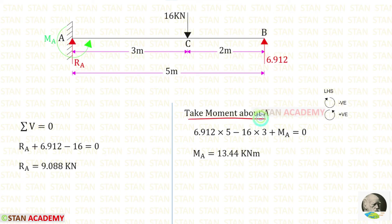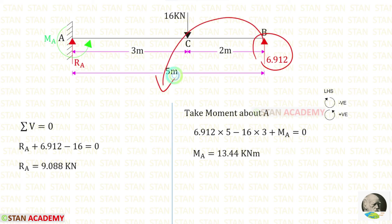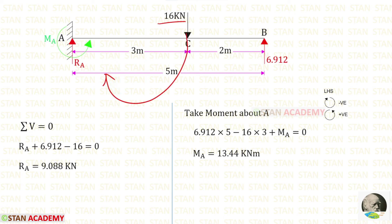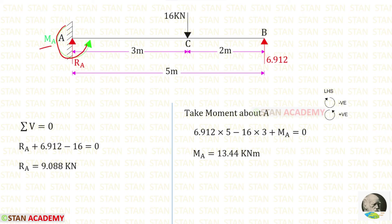Now let us take moments about A to find MA. Moving from the left, clockwise is negative and anticlockwise is positive. The vertical reaction RB acts anticlockwise at a distance of 5, and the 16 kN load acts clockwise at a distance of 3. Assuming MA acts anticlockwise, we get a positive value, confirming MA is acting in the anticlockwise direction.